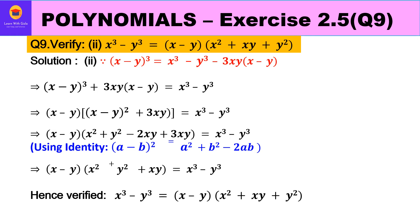For part 2, we have to prove x cube minus y cube equals (x minus y)(x square plus xy plus y square). Since it involves x cube minus y cube with a minus sign, we use identity 7: x minus y whole cube equals x cube minus y cube minus 3xy(x minus y). Taking minus 3xy(x minus y) to the left hand side makes it plus 3xy(x minus y).